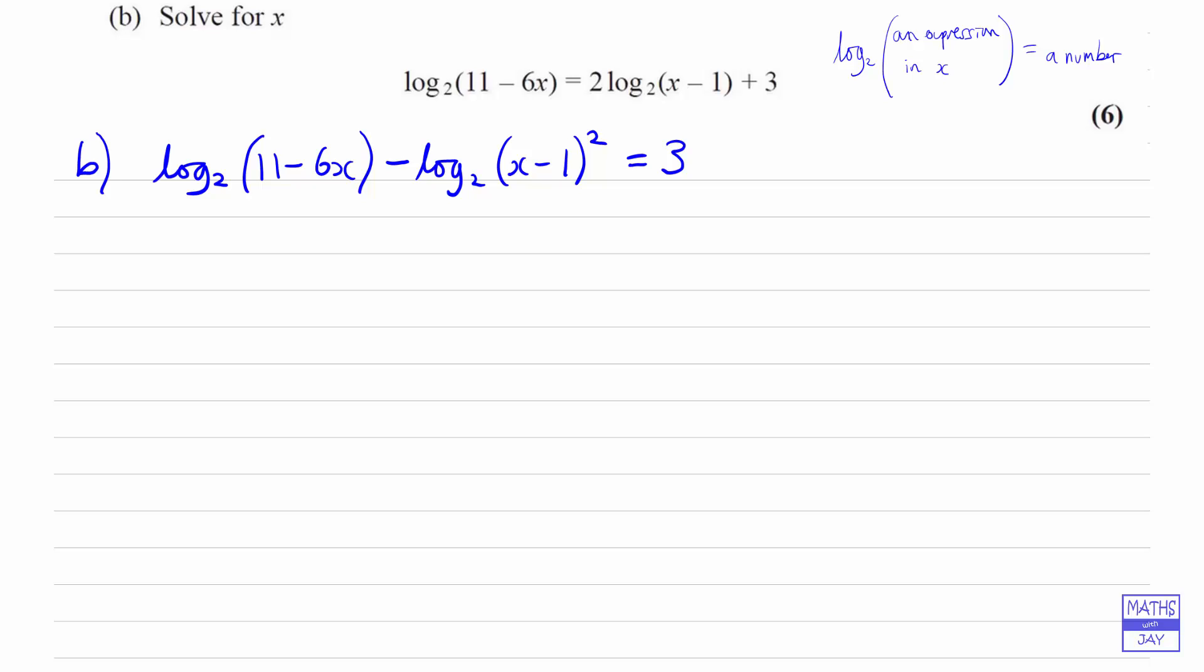So remember we're trying to write the left-hand side as one log, and we can do that by using one of our laws of logs. We've got a log of something minus the log of something else. So here we've got log, the first expression divided by the second one. So we're going to have the log to base 2, and on top we're going to have the first expression, 11 minus 6x. And then because we're subtracting the other log, we're going to be dividing by x minus 1 squared. And now you can see that we have achieved what we set out to do. We've got the log to base 2 of something in x equals a number.